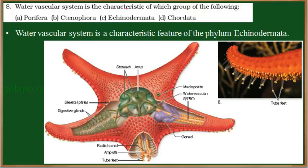Water vascular system is the characteristic of which group of the following? Porifera, Ctenophora, Echinodermata, or Chordata?